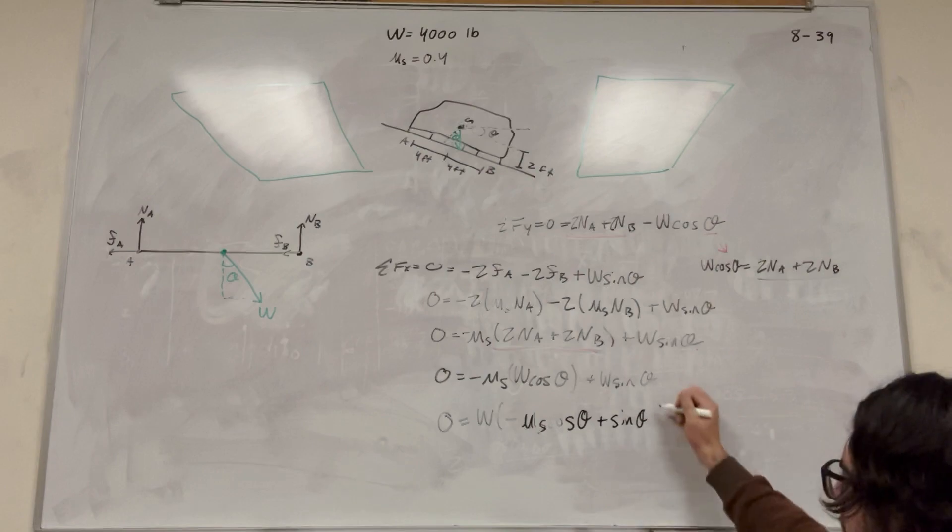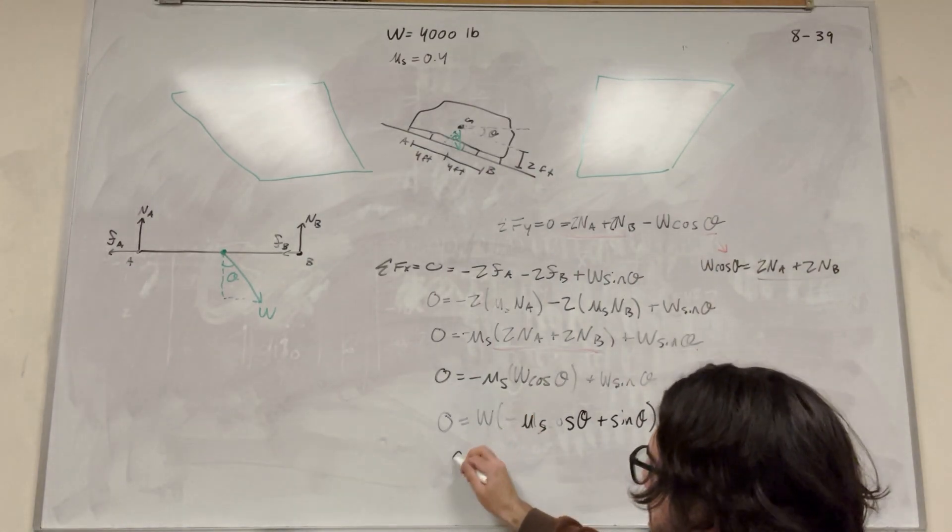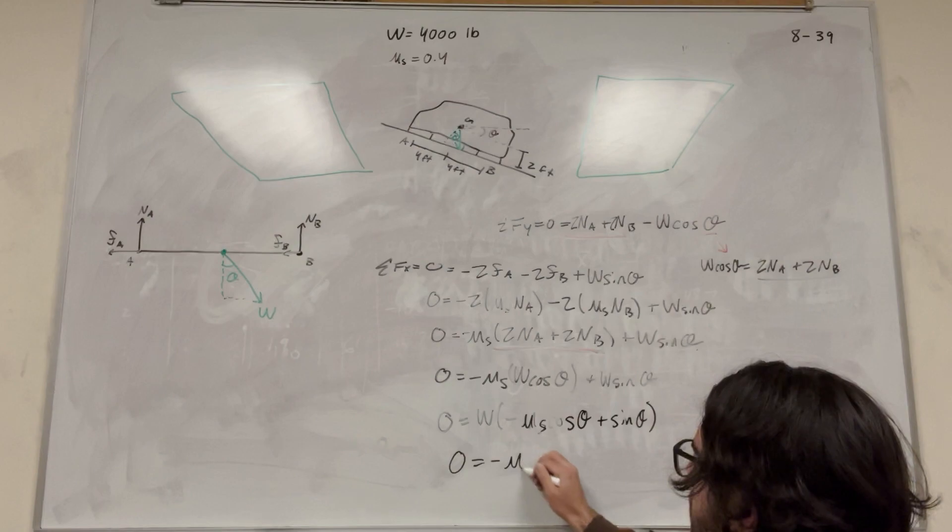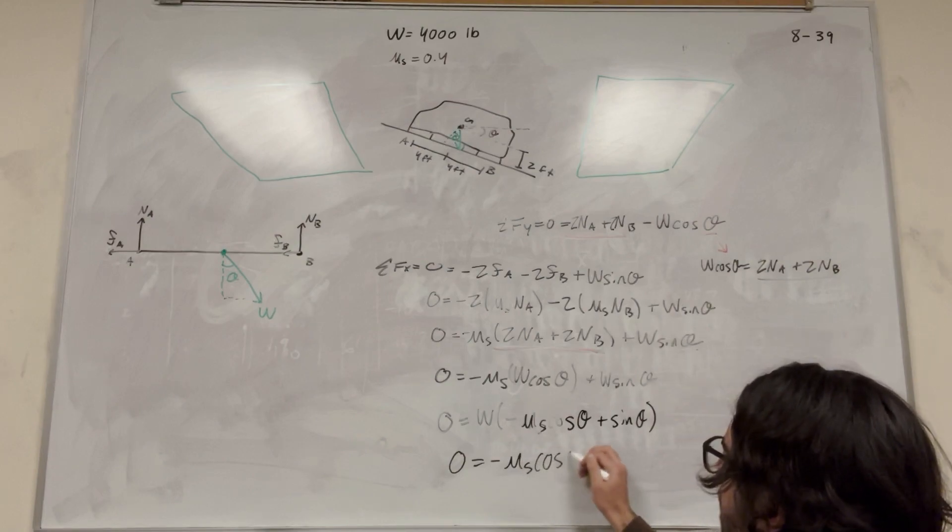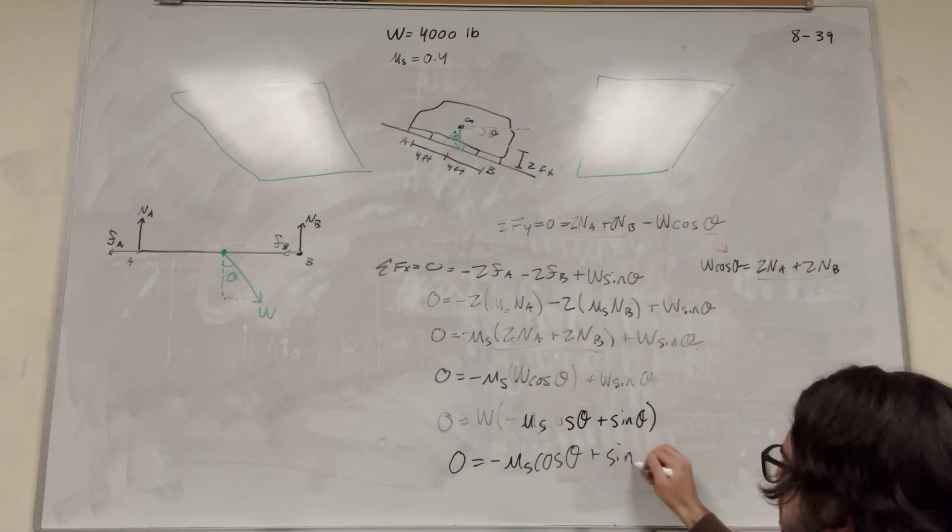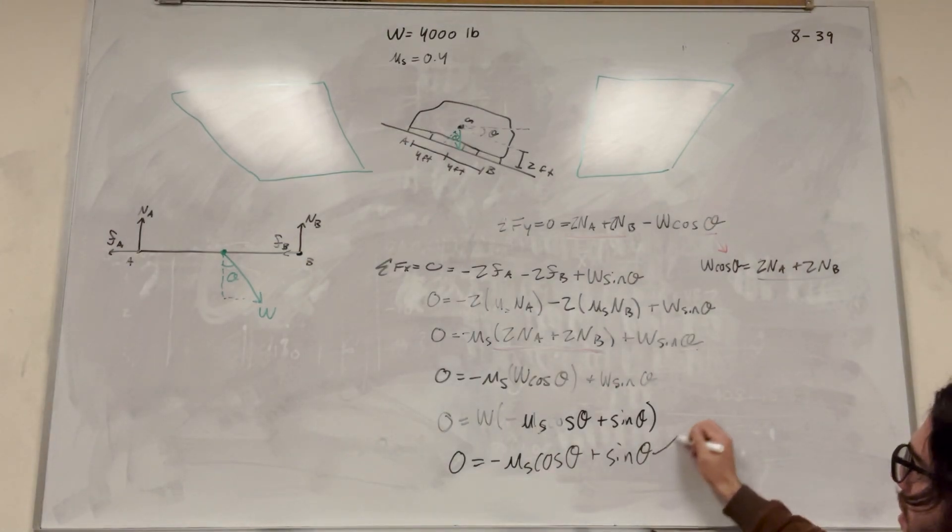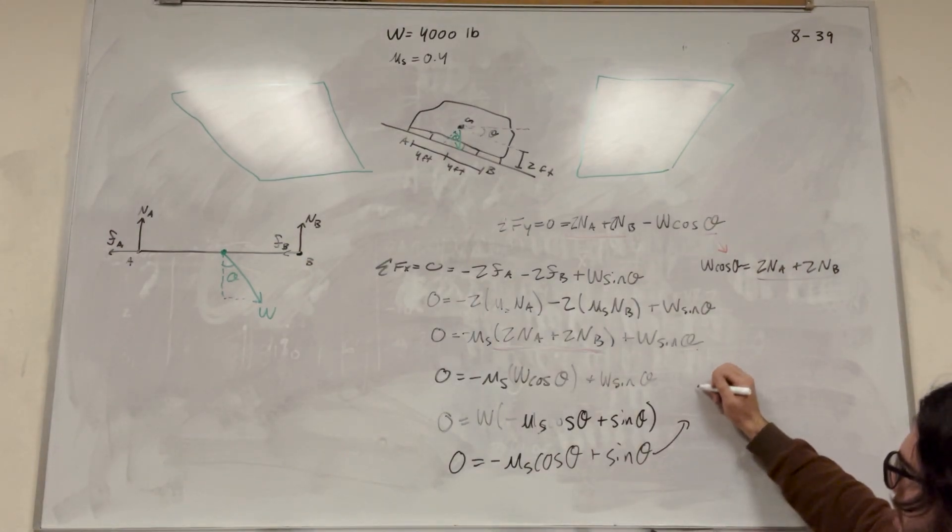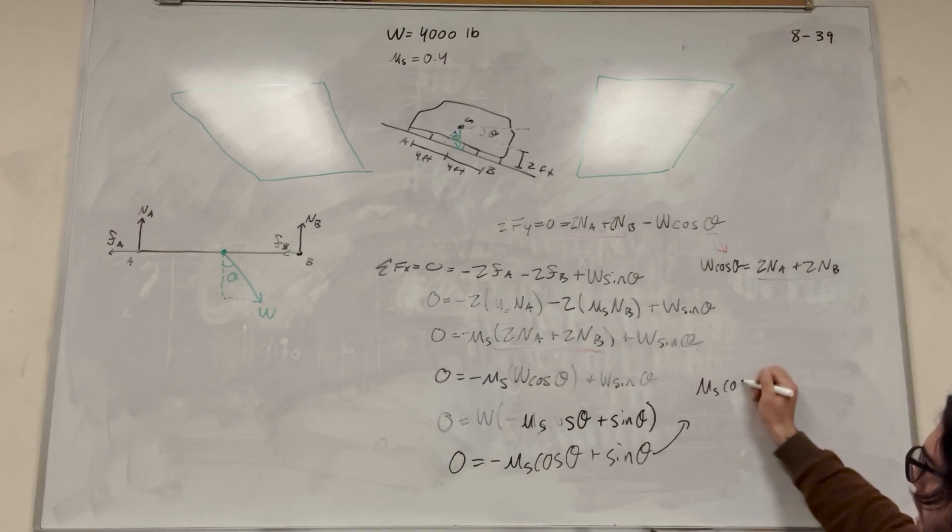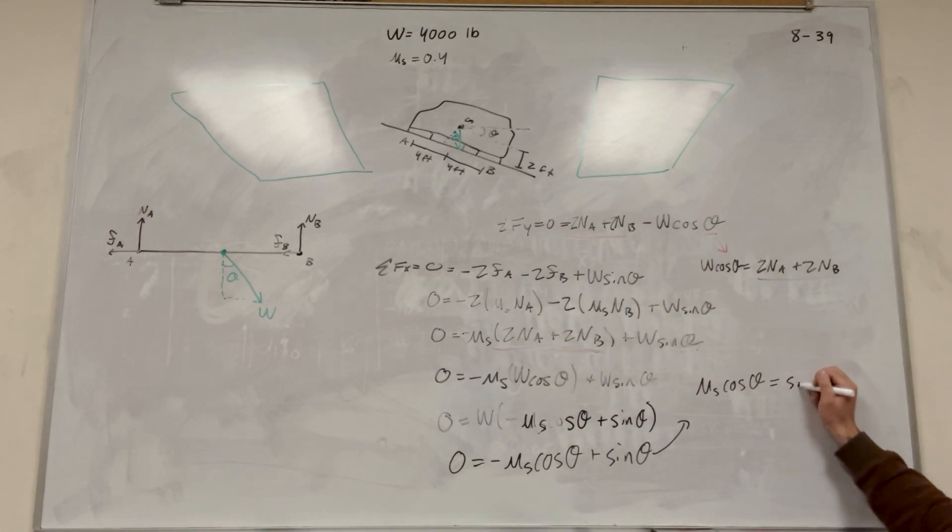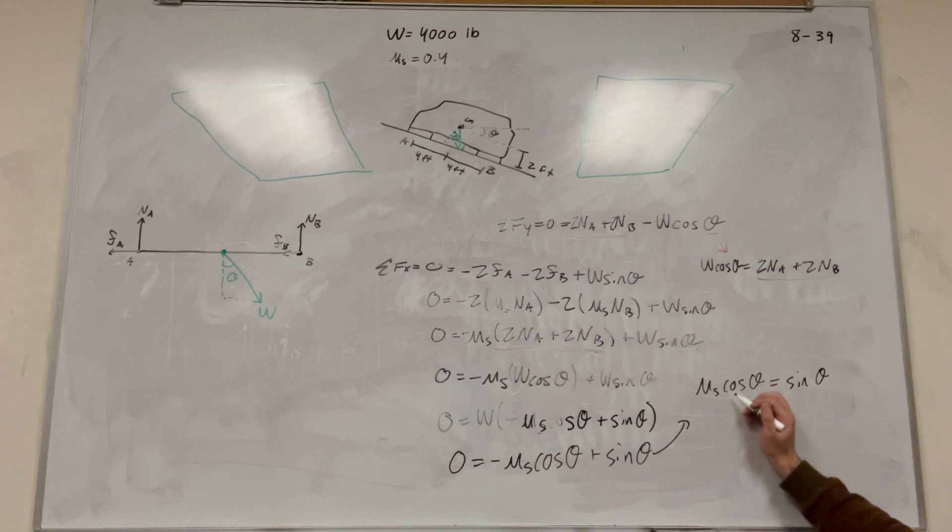Okay, so then we can divide by W. So it'll be zero is equal to negative coefficient of static friction, cosine of theta plus sine of theta. So this equation now is pretty simple to solve. So let's move one of these over. So coefficient of static friction, cosine of theta is equal to sine of theta. We're looking for theta, so let's go ahead and divide by cosine. Static friction. So sine over cosine is tangent of theta. So then I'll have to do inverse tangent. So inverse tangent of coefficient of static friction is equal to theta.